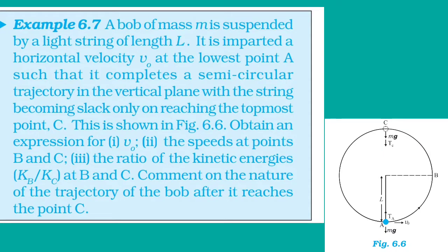Example 6.7. A bob of mass m is suspended by a string of length L. It is given a horizontal velocity V0 at the lowest point A such that it completes a semicircular trajectory in the vertical plane, with the string going slack upon reaching the topmost point C. Obtain expressions for: first, V0; second, the speed at points B and C; and third, the ratio of kinetic energies KB to KC at points B and C. Also comment on the nature of the trajectory after point C.